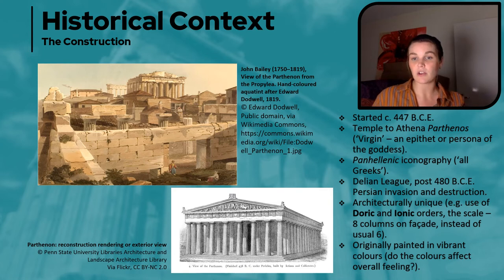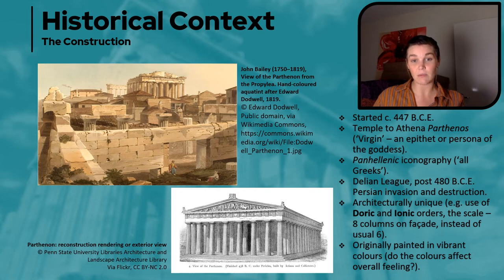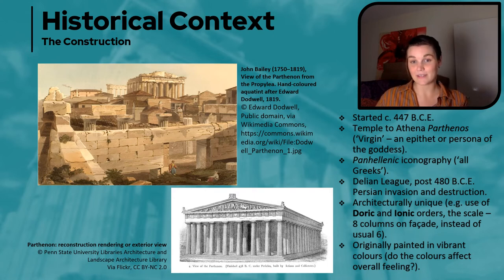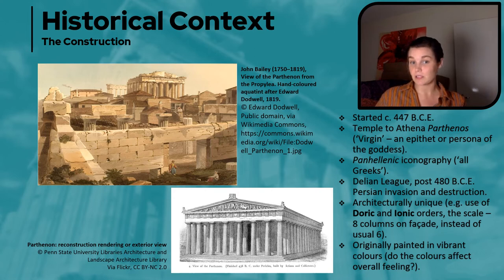Construction of the Parthenon began around 447 BCE. A couple of decades prior, the Athenian Acropolis and all the temples that existed had been destroyed by the Persians during their invasion of 480 BCE under Xerxes, and this led to the formation of the Delian League — a unification of all those independent Greek poleis under Athens. With the money Athens collected from the Delian League, Athens put a lot of it toward rebuilding the Acropolis, and the Parthenon was at the center of that new building program.